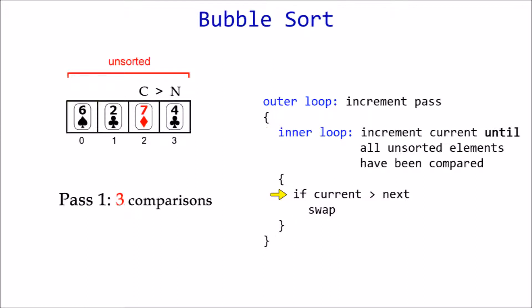Seven is greater than four, so they are swapped, positioning the seven at the end of the unsorted section. It now becomes part of the sorted section and thus no longer needs to be compared against.